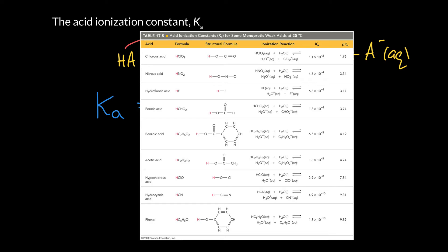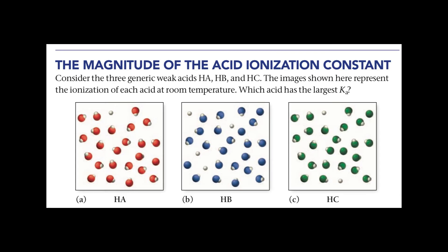Here's an interesting puzzle. We have three different molecular views of an acid: HA, HB, and HC. We typically put the H first to indicate an acidic compound. Which one of those has the largest Ka? Pause the video and see if you can figure out which one is the most acidic.